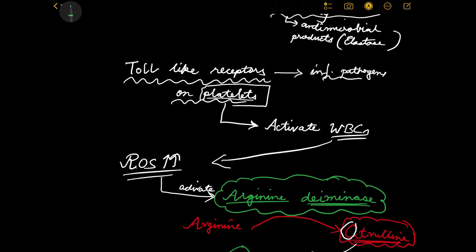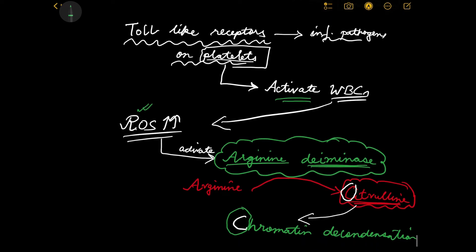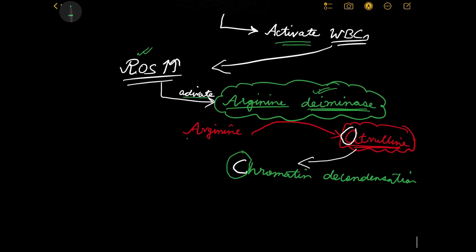The platelets identify the infective pathogen, they activate the WBCs, and this leads to all those things happening — finally leading to reactive oxygen species dependent killing. Their concentration goes up because the bacterial load is very high, and this activates the enzyme arginine de-iminase, which leads to the conversion of arginine to citrulline. Citrulline then leads to chromatin decondensation.